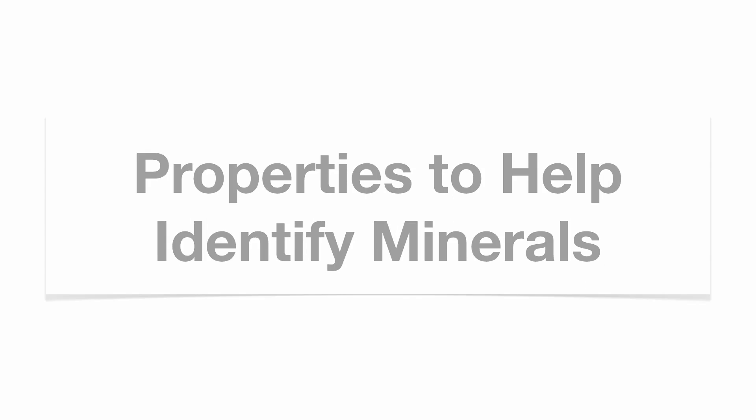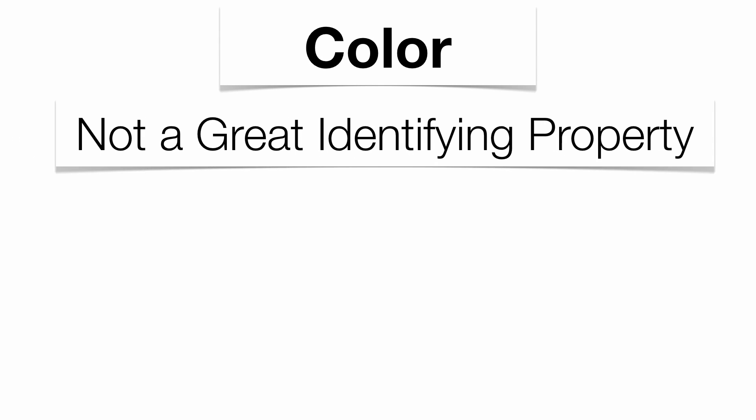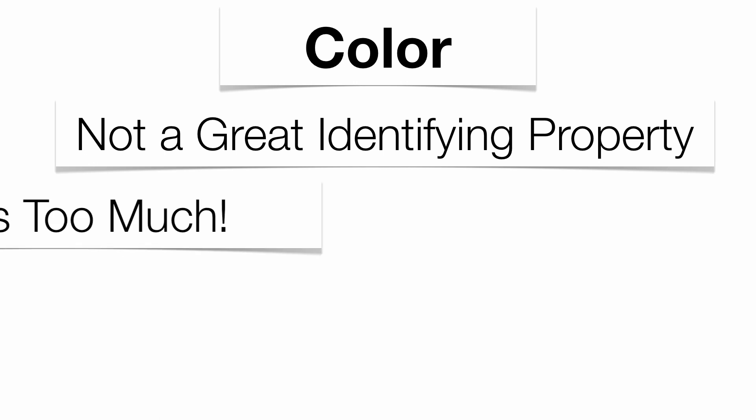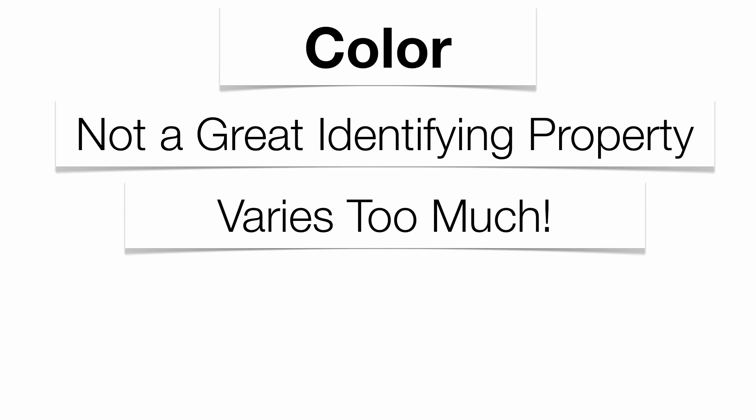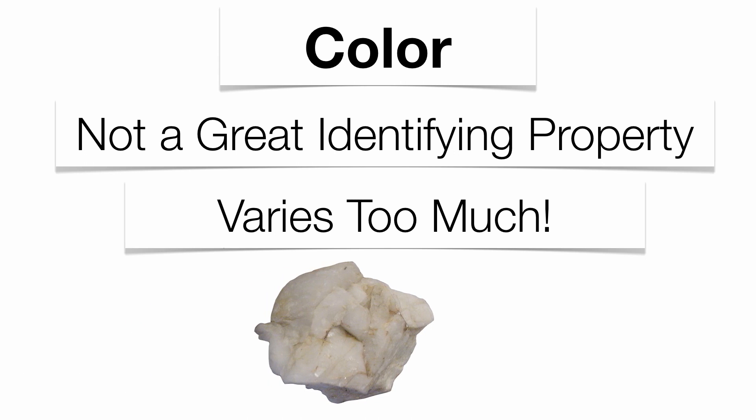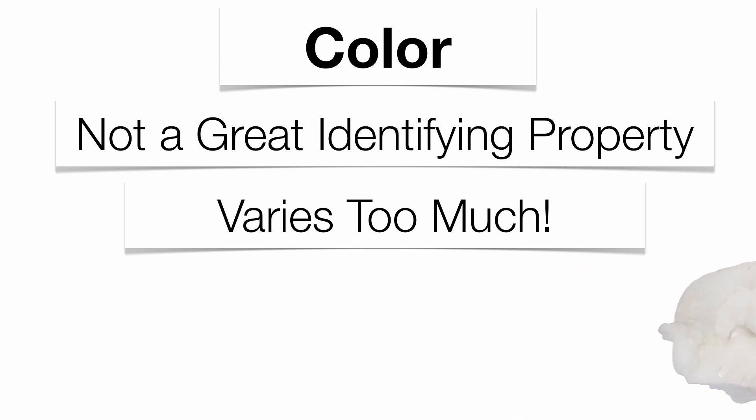There are certain properties that help us identify minerals. The first one is color. Color is not a good identifying property because it changes so much from sample to sample — your color is going to vary tremendously. For example, this sample of quartz is what we call milky quartz.